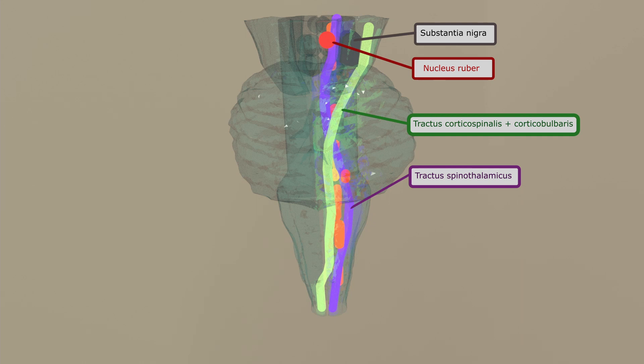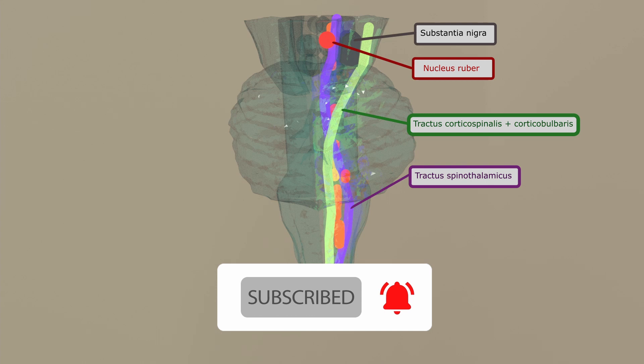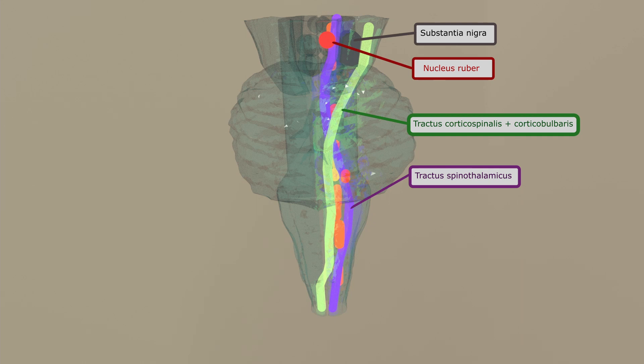For the tractus spinothalamicus, it has its decusation—or it crosses over—at the level of entry into the spinal cord, so it would be below the brainstem.